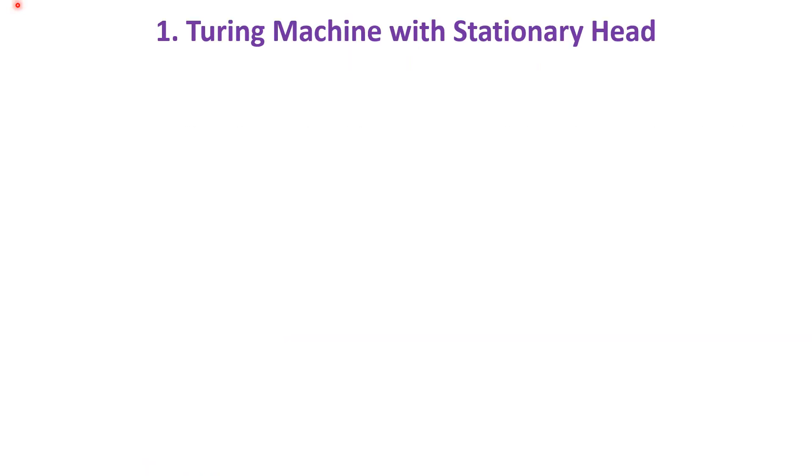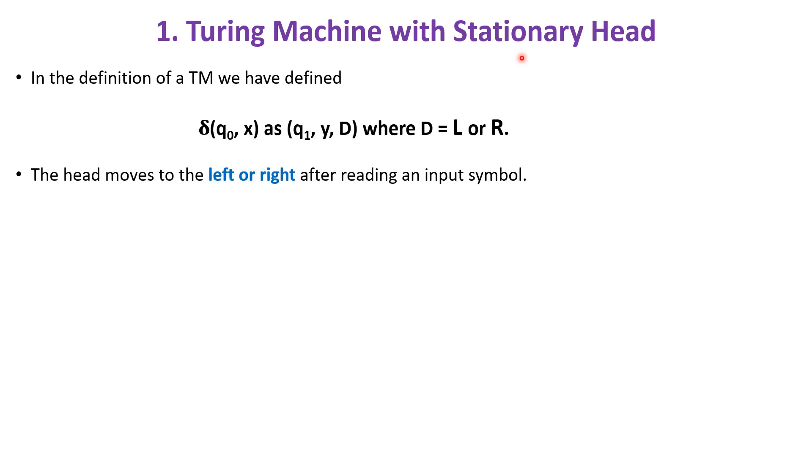The first technique is Turing machine with stationary head. In the definition of the Turing machine, we have defined δ(q0, x) as (q1, y, D), where D represents L or R. That is, the head moves to the left or right after reading an input symbol.